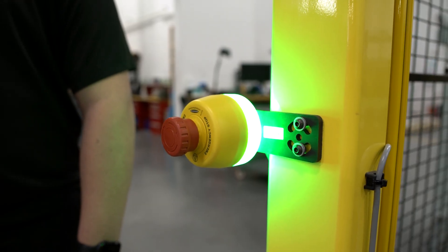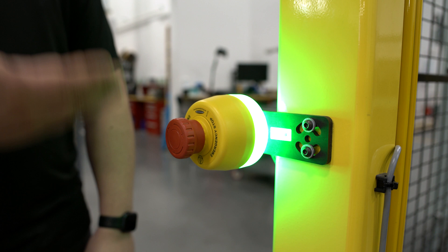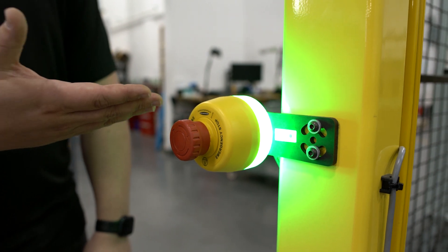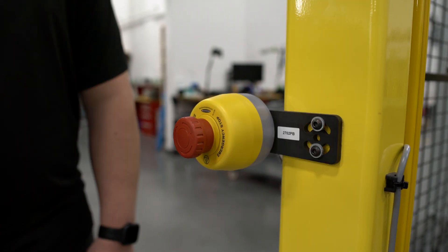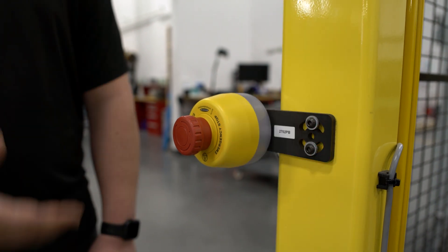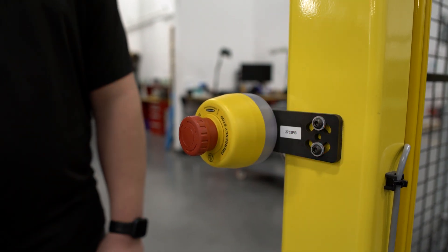There are many varieties of e-stop buttons. This e-stop button that we are showing lights up, and when pressed will light up red and blink, notifying the operator that this is the e-stop button that has been pressed.